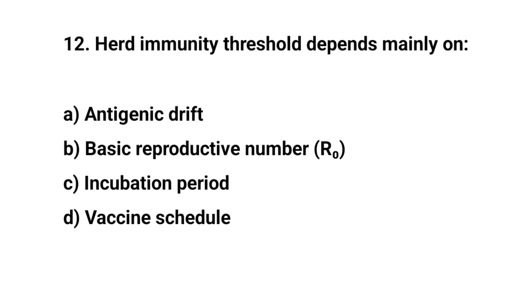Question number 12. Herd immunity threshold depends mainly on? The right answer is B: Basic reproductive number.